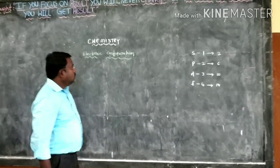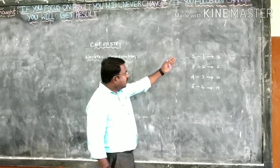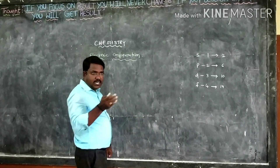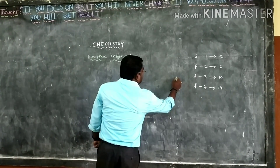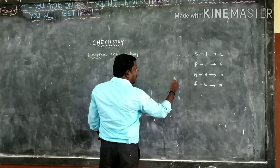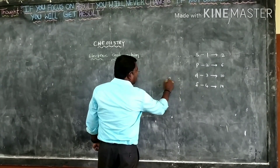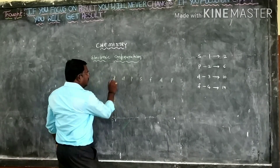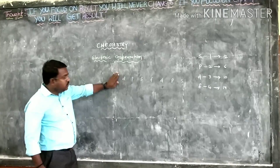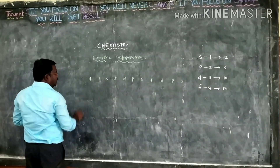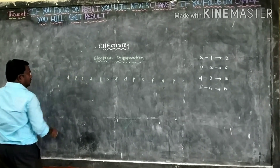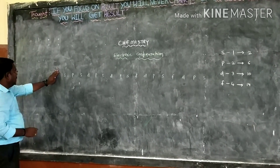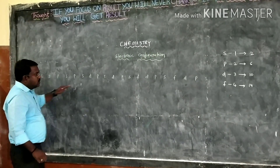Now, how to write electron configuration in the easiest way. Before that we need to know the basic idea. We need to create a formula. So you write S, P, D, F orbitals from right to left: S, P, D, F. Once again: S, P, D, F. Then in the next step you skip the F and write S, P, D. Then S, P. Then skip P, leaving S and S. So this is the sequence.